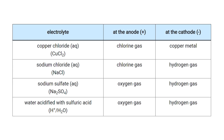Some common electrolytes are shown on the screen now: copper chloride, sodium chloride, sodium sulphate, and water acidified with sulphuric acid. You need to be able to recognise in an exam what products are made at each electrode. You can figure this out by using your rules of electrolysis.